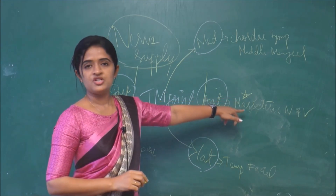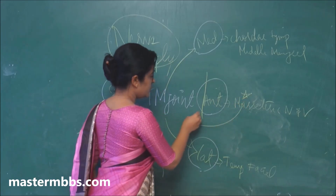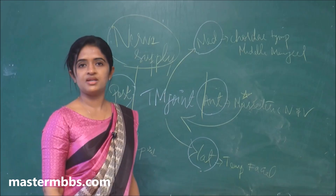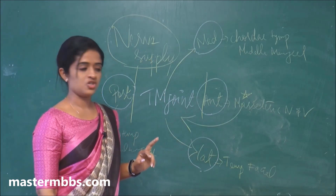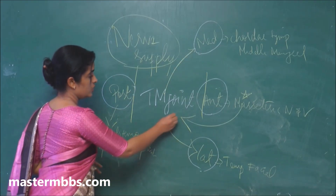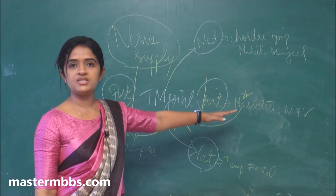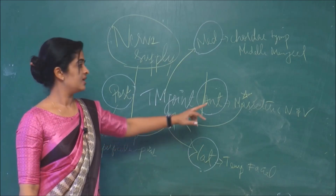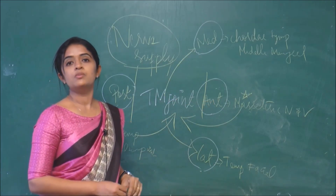From the anterior part, we have mentioned the masseteric nerves and vessels. The masseteric nerve will be going and supplying the temporomandibular joint from the anterior aspect, and there will be one more nerve supplying the temporomandibular joint — that is from the posterior relation — that is the auriculotemporal nerve. So, masseteric nerve from the anterior aspect and auriculotemporal nerve from the posterior aspect; these two will be supplying the temporomandibular joint.